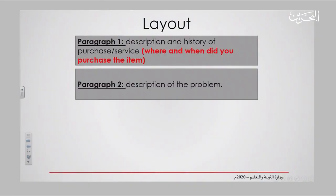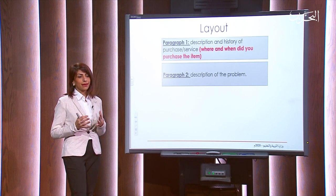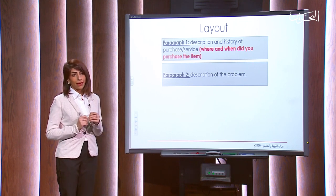In paragraph two, you will give a description of the problem. This is a very important part. You are going to tell exactly what you ordered and what the problem is that you are now facing with the item. The problem differs from case to case — it could be size, color, or different from the picture on the website. Whatever the problem is, make sure you write a full description about it.